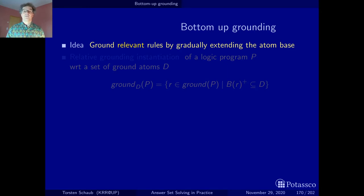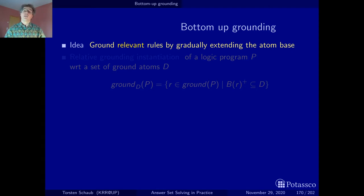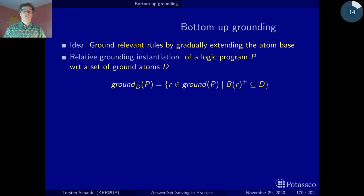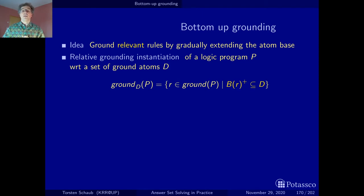Now let's make this precise. To capture the set of ground rules that are relevant with respect to an atom base, we refine the notion of a ground instantiation that we have already seen in the introductory section, but now we parameterize it with a set of ground atoms D. We start from a non-ground logic program P — the one we want to ground — and this parameter D helps us identify among all ground instances of P the ones that are relevant with respect to D.